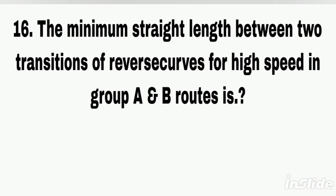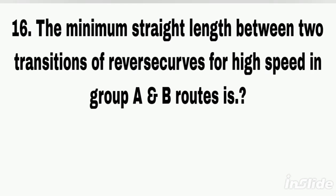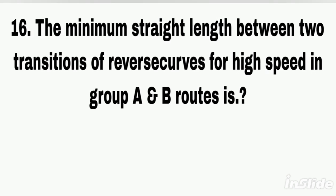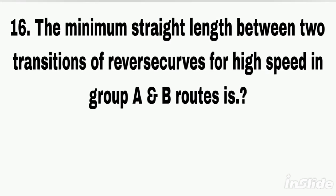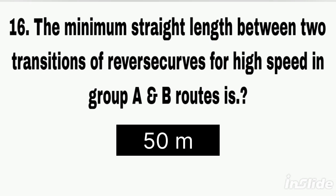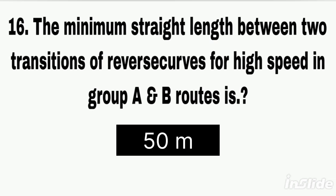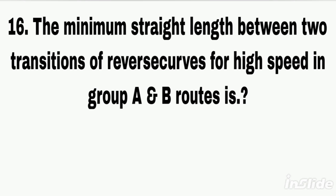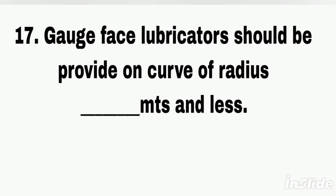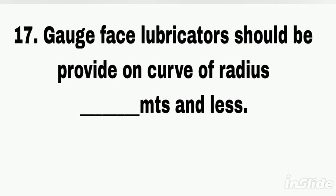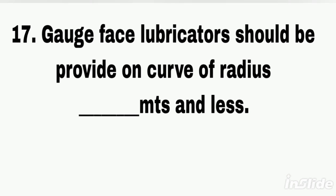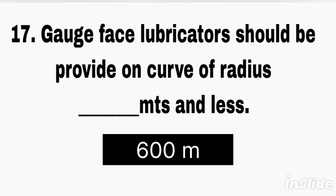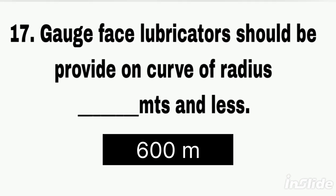Q16. The minimum straight length between two transitions of reverse curves for high speed on group A and B routes. Answer: 600 meters.